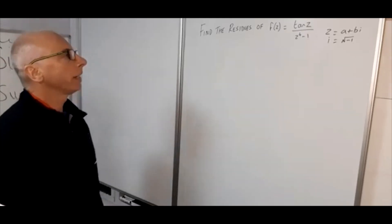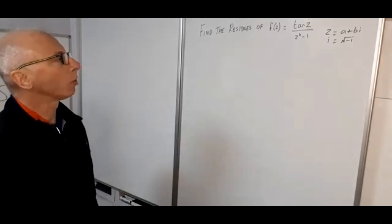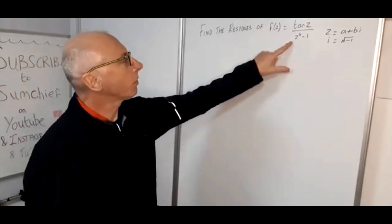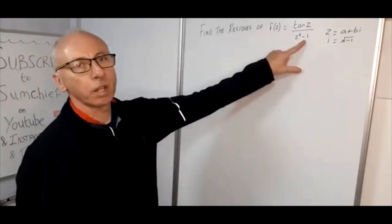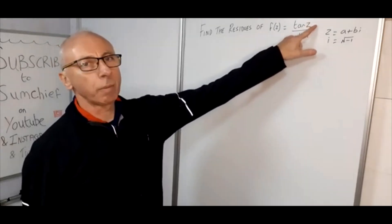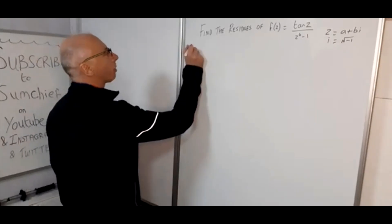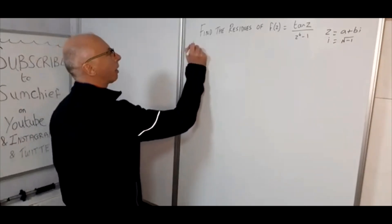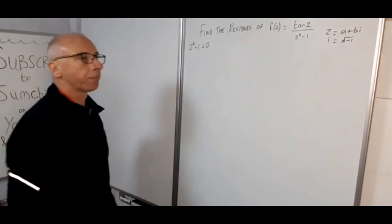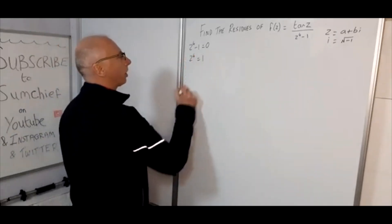We're looking for the residues, so we need to find the poles. To find the poles of this we need to find out when the denominator is going to be zero. We're not going to worry about the numerator just yet. So what we're looking for is when z to the power of 4 minus 1 equals zero, which means z to the 4 equals 1.